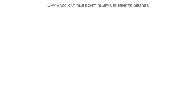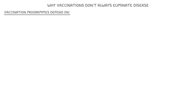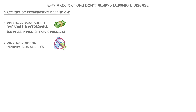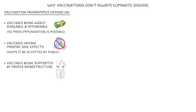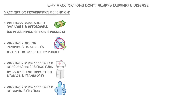Finally, let's discuss why vaccinations don't always eliminate disease. Preventing and fighting epidemics and pandemics requires more than just vaccinating a large number of people. Successful vaccination programs also depend on vaccines being widely available and affordable so that mass immunisation is possible, vaccines having minimal side effects to help them be accepted by the public, vaccines being supported by proper infrastructure in order to make sure there are resources for the production, storage, and transport of the vaccine, and vaccines being supported by administration to ensure as many people as possible receive the right dose at the right time by trained healthcare workers.